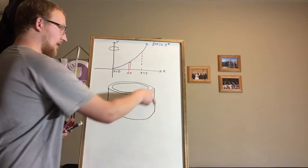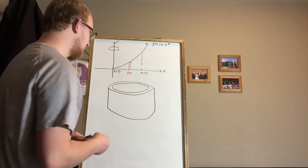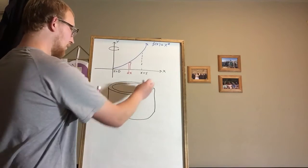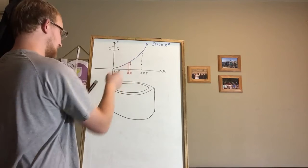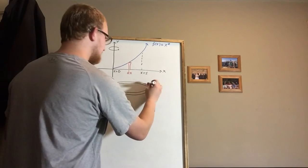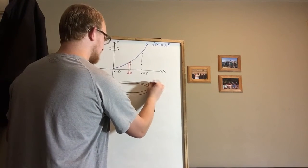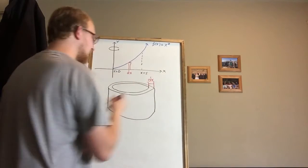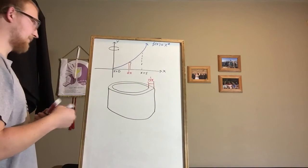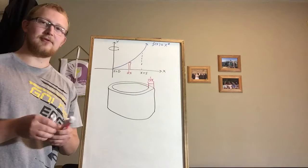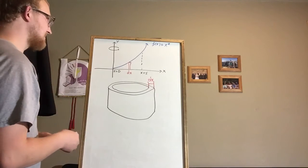And except instead of our height being dy now, now our width of this shell is dx. And so if we're looking here at the width of this shell it's going to be dx now. And now we're going to have to derive what the height and the radius and that sort of thing is.